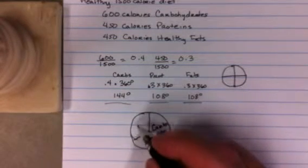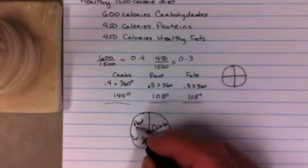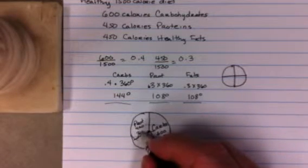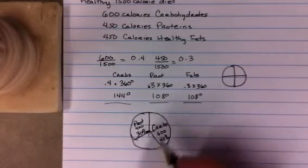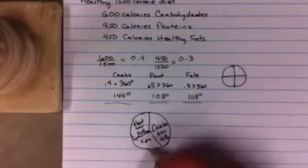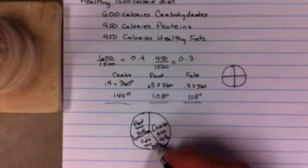That doesn't always work out that nicely. So I'm going to put the next category over here, proteins. And that's 450 calories. And that is about 30%. And then fats are this last category. And that's 450 calories. And again, that's 30%.